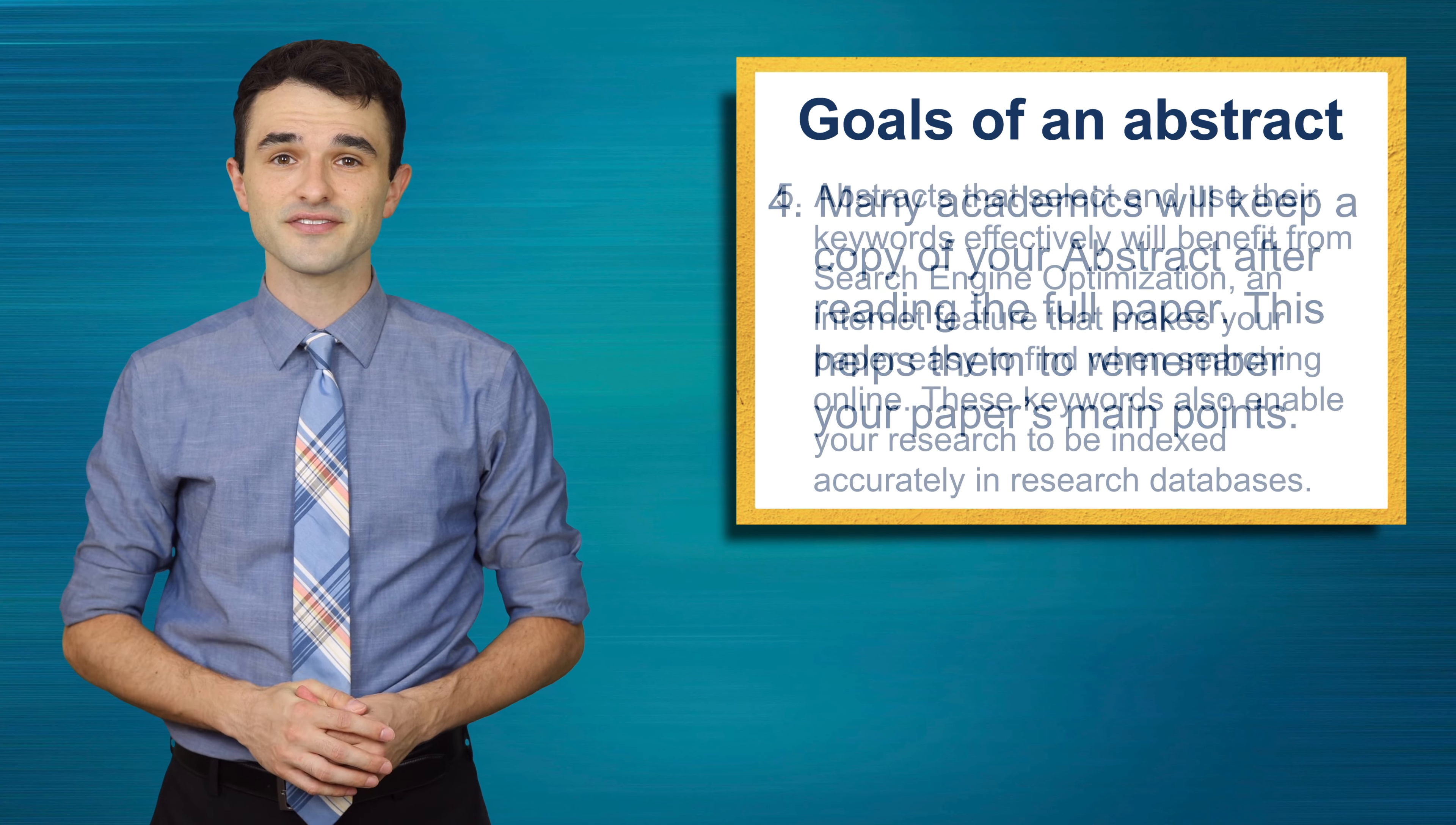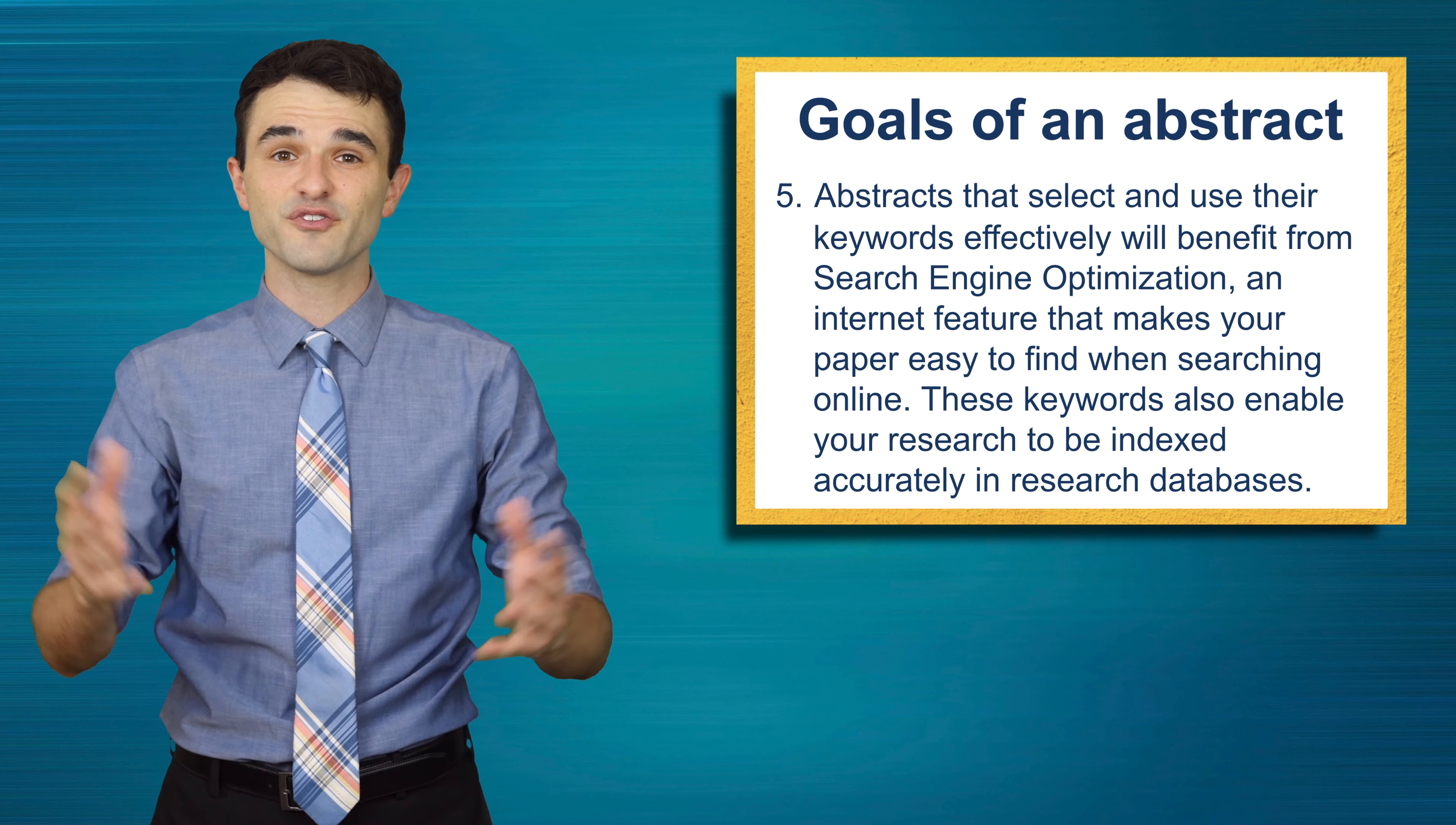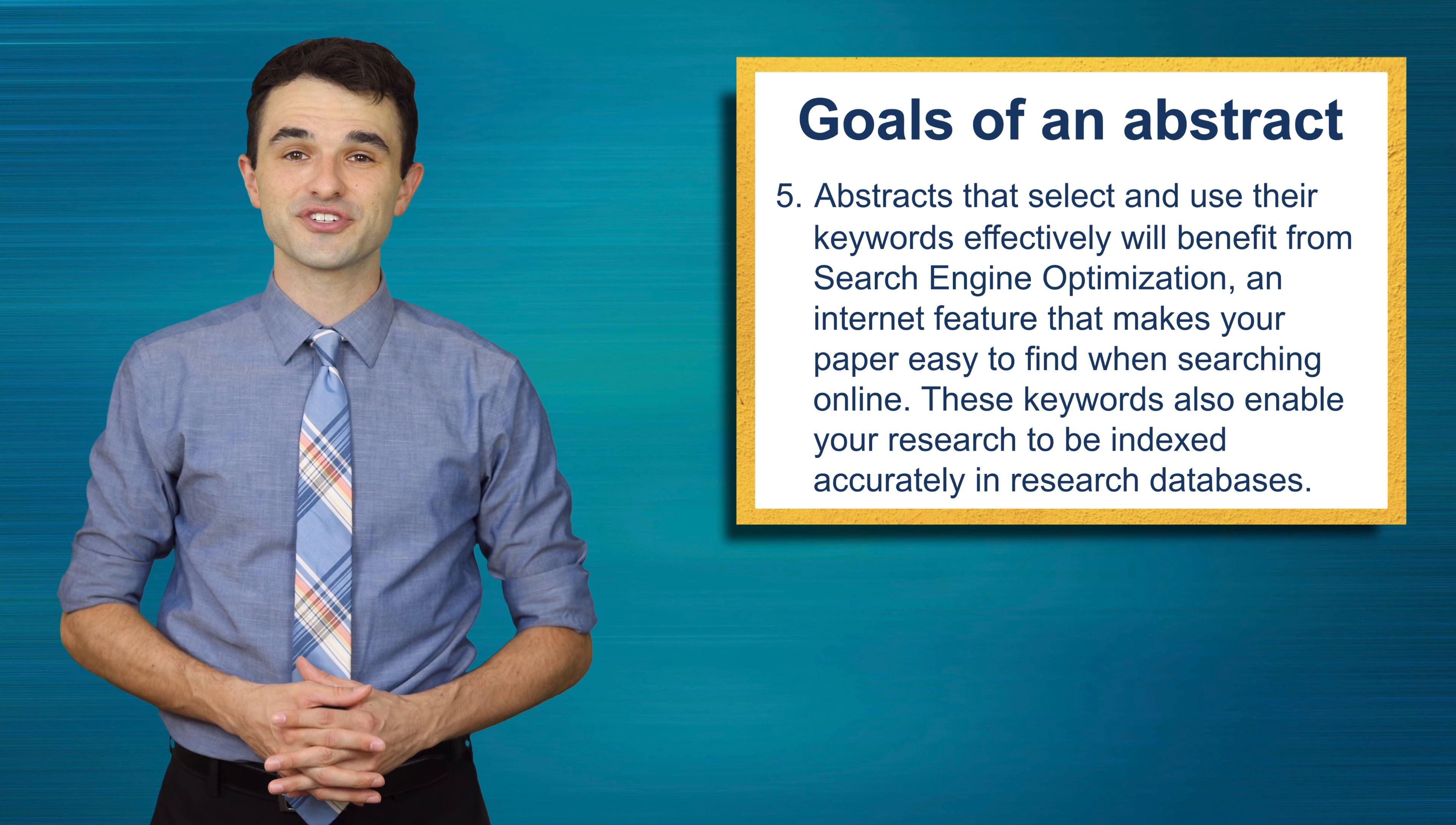Goal 5: Abstracts that select and use their keywords effectively will benefit from search engine optimization, an internet feature that makes your paper easy to find when searching online. These keywords also enable your research to be indexed accurately in research databases.